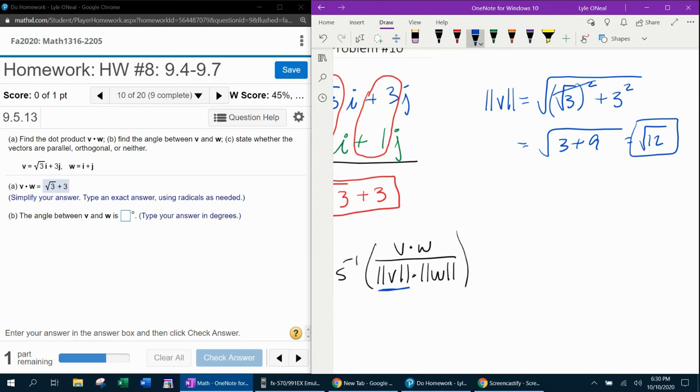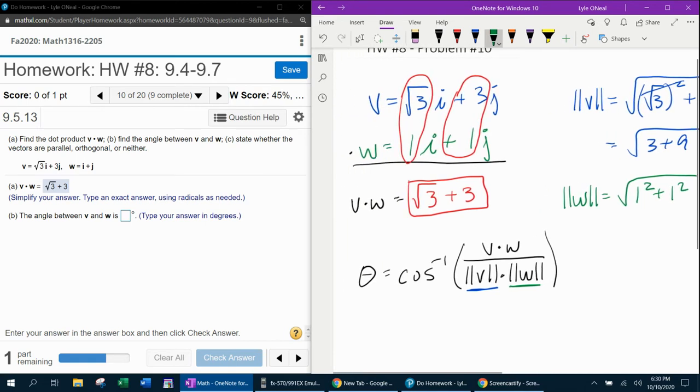I'll leave that as √12, and then find the magnitude of W. That's the square root of 1² plus 1², which is √2. Again, I'll leave that as √2 since it'll get plugged in below.